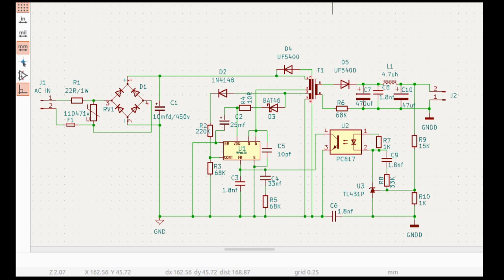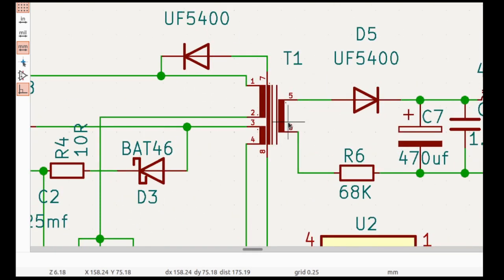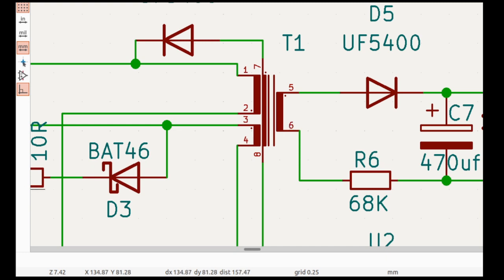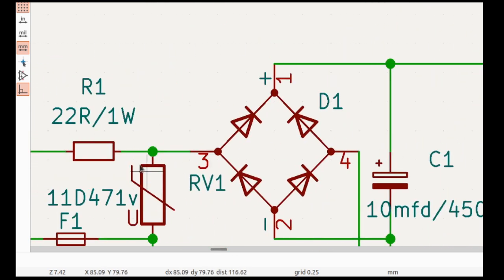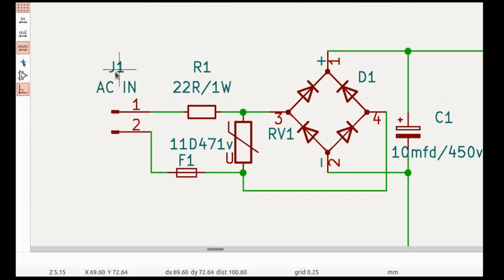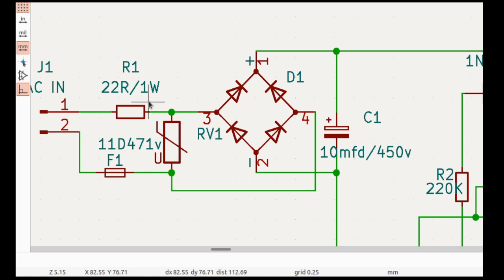Now I'm going to show you. Look at this transformer. That is your primary winding. Supply voltage is generated here. There is 220 AC input. There is a bridge, there is a 1 watt 22 ohm resistance, there is a fuse.